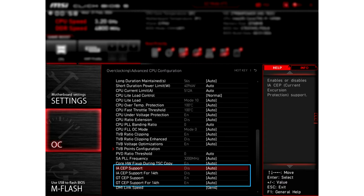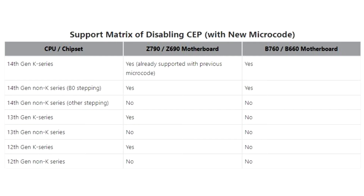SEP, or Current Excursion Protection, is a function designed to prevent system instability caused by insufficient CPU voltage. However, the impact varies depending on the platform and combinations used, sometimes leading to a performance drop. Enthusiast gamers may choose to disable the SEP function to maximize performance.